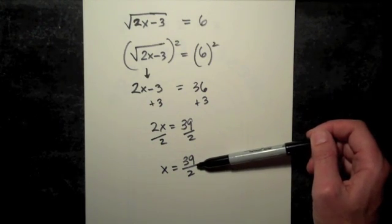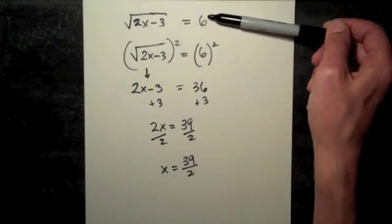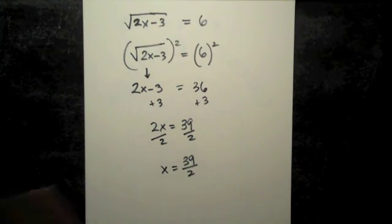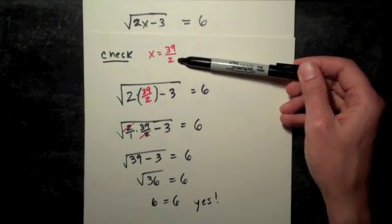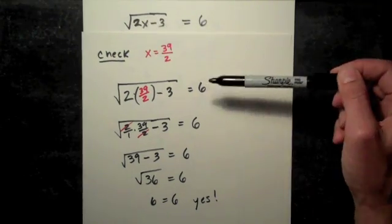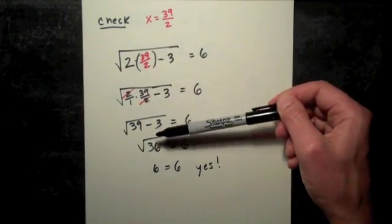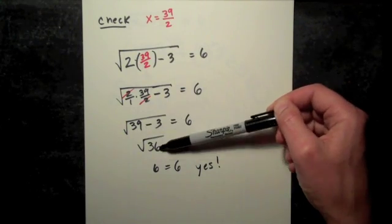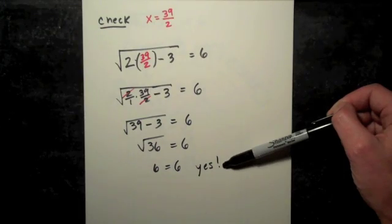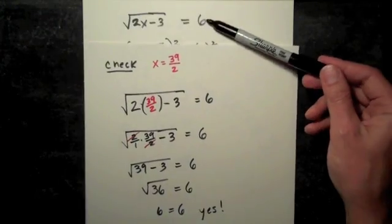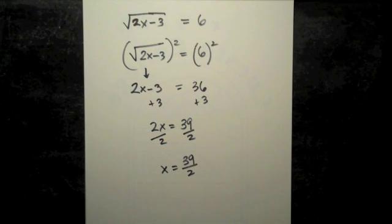Step four, very important. We must check to see if this solution also works in the original equation. And I've worked that out for you. 39 halves was our potential solution. Plugging it in for x in this equation, this one works out nicely. The two's cancel here so we don't even need a common denominator. 39 minus 3, square root of 36 is 6. The right side is also 6. This works. That means we get a true statement when we plug this value in. That makes 39 halves a solution to this equation.